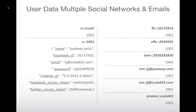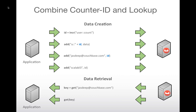Here's an example combining both patterns: I have a user count using the counter ID pattern, then the main document using that key, and then several lookup documents — Facebook ID, Netflix ID, Twitter ID, two email addresses, and username — all pointing to that main user document. For each social login, I can pull up the lookup and then retrieve the main user document. When creating, you generate multiple documents depending on how many lookups you want, then retrieval takes two operations: get the lookup key, then get the main document.